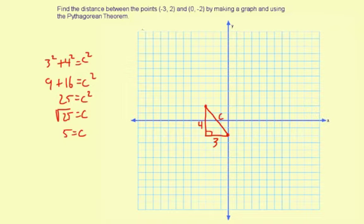So the distance between negative 3, 2 and 0, negative 2 is 5, as represented by drawing the right triangle and using the Pythagorean Theorem.